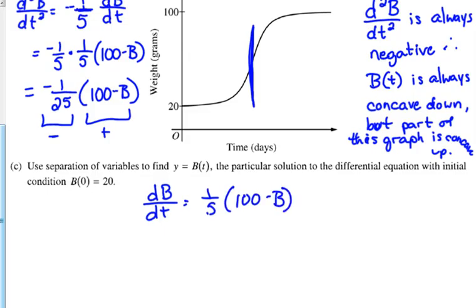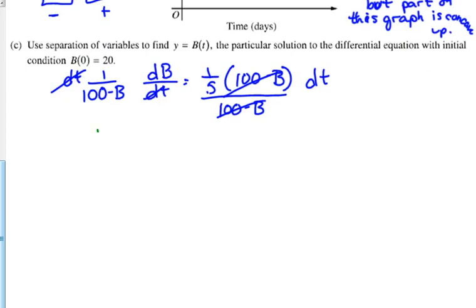So, if we do that, we start with dB over dT is equal to one-fifth, one-hundredth, minus B. So, we need to divide both sides by one-hundredth, minus B, so that it's over here with the dB. So, we've got one over one-hundredth, minus B, dB.